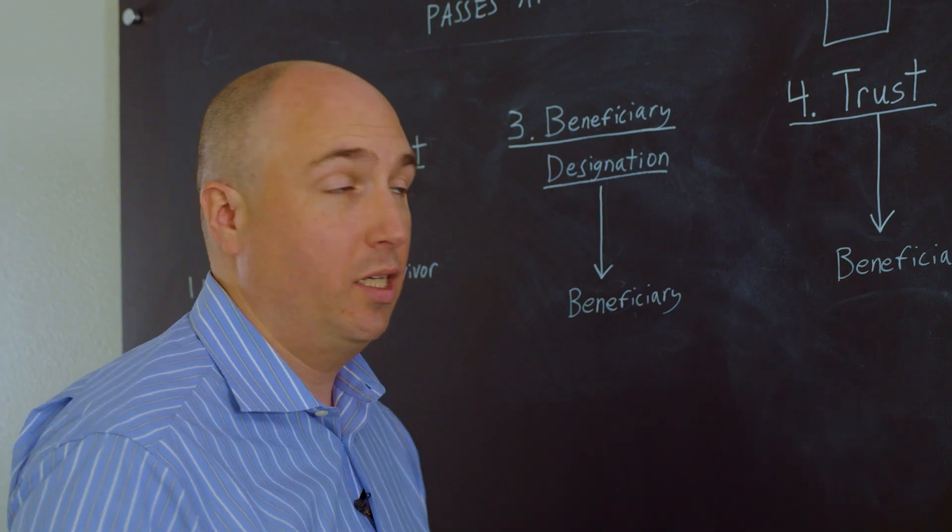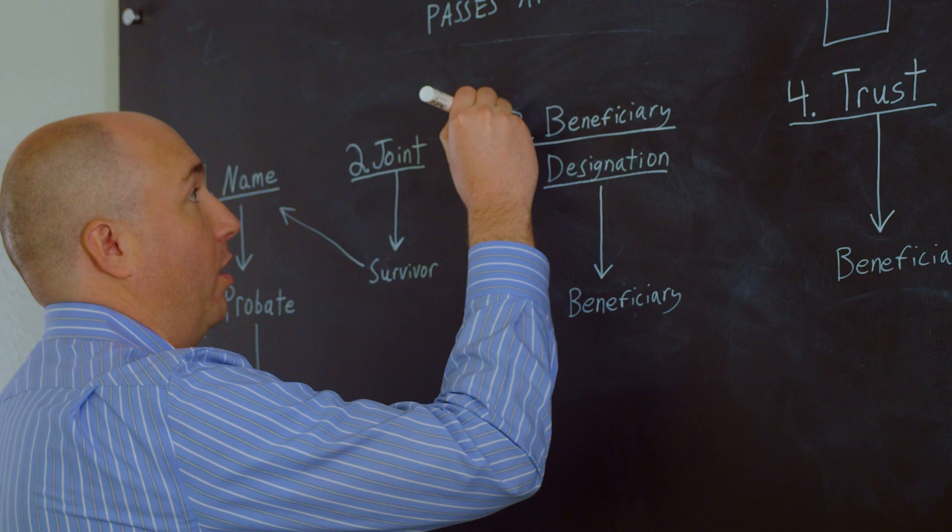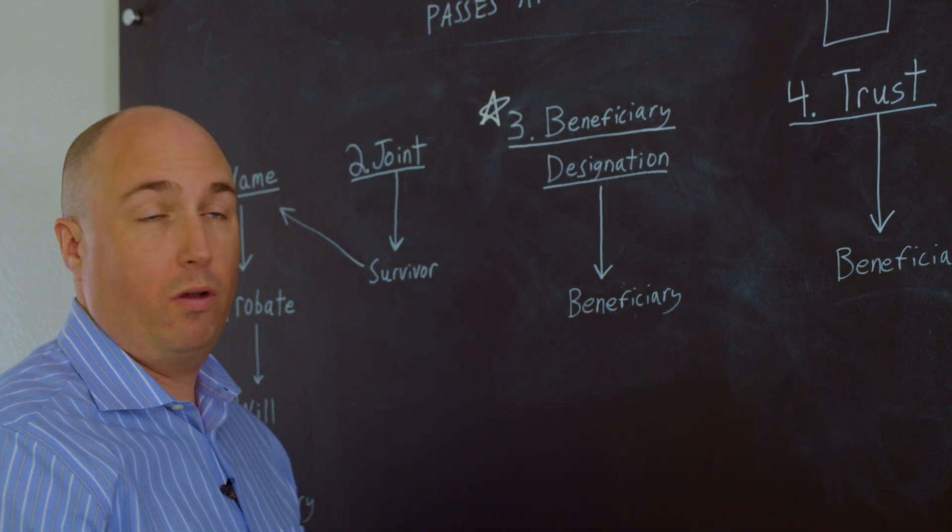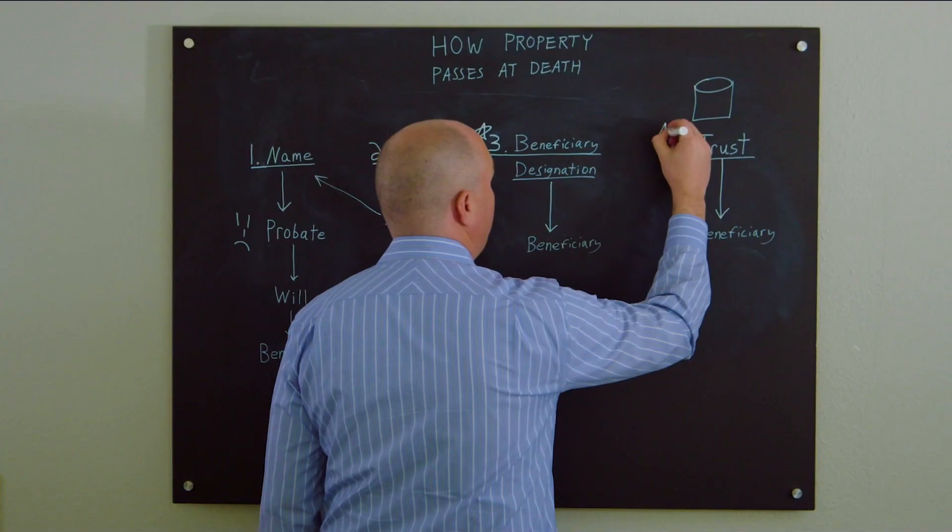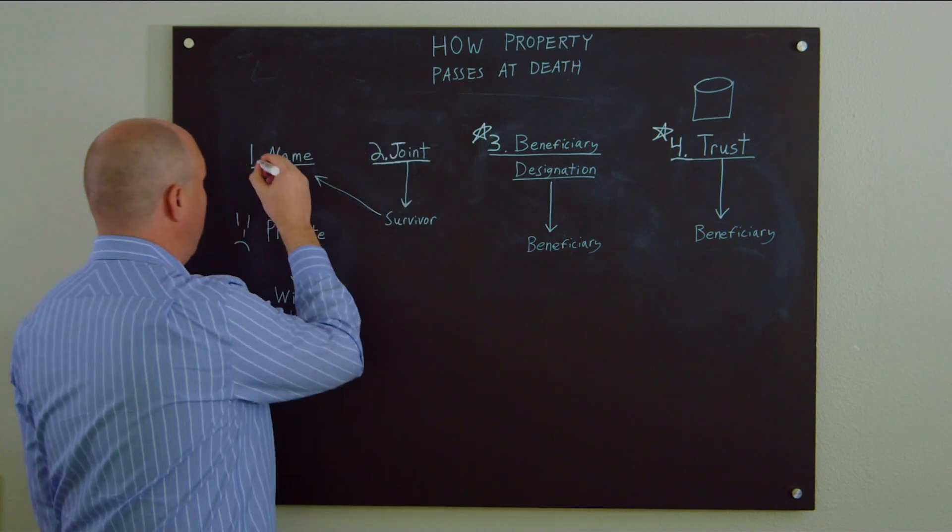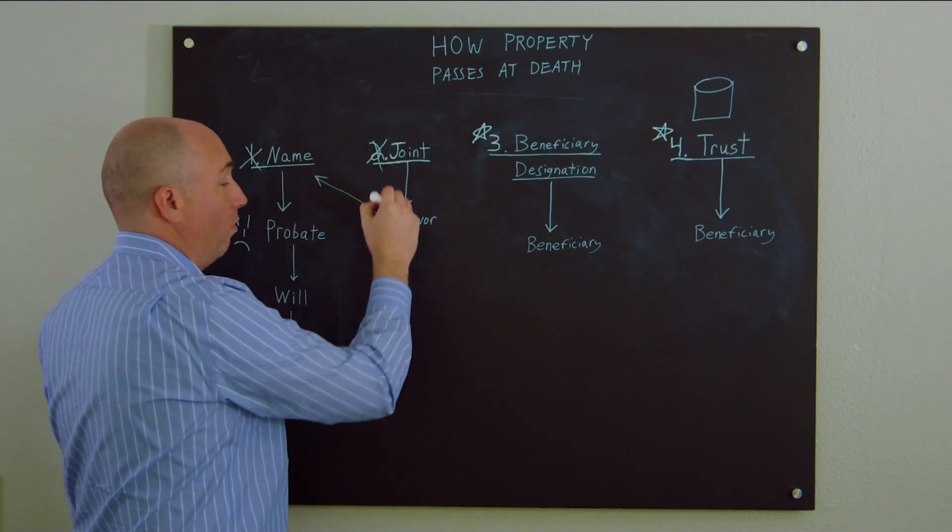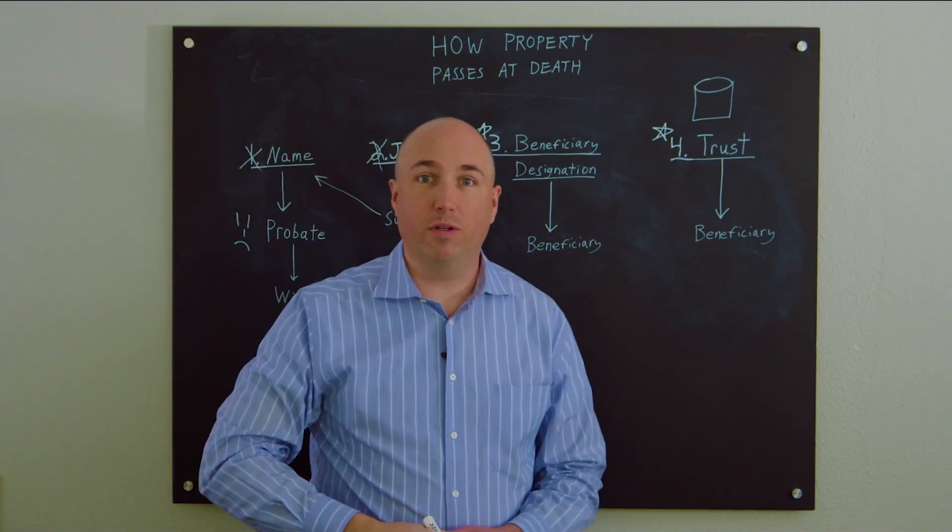The punchline on this, if we want to avoid probate, we want everything you own to be owned here or here, and we don't want to own anything here or here if the goal is to avoid probate.